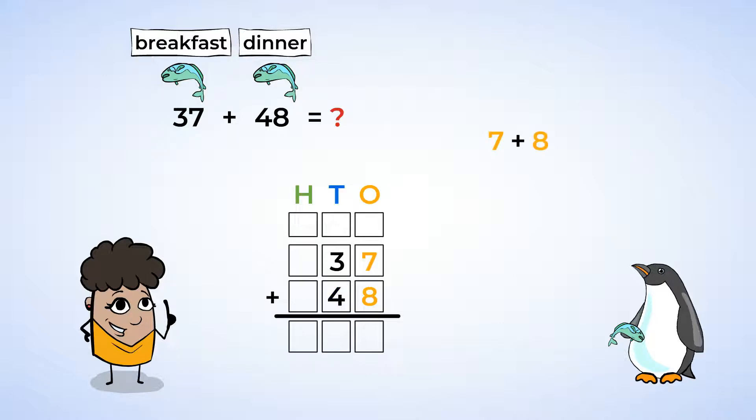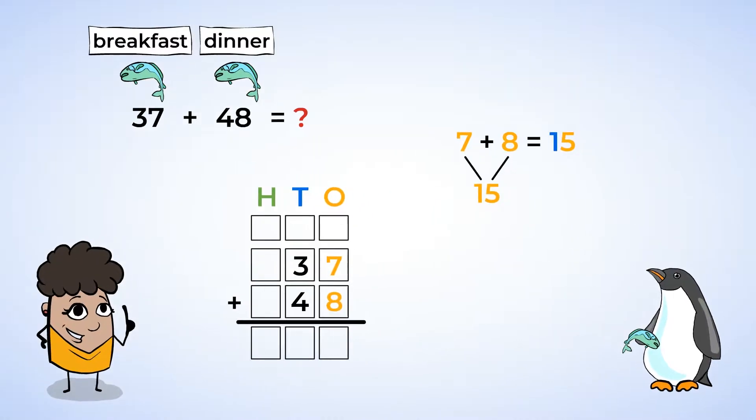We always start with the ones place, so we need to add 7 and 8 first. 7 plus 8 is 15, which has 1 tens and 5 ones. This number is too big for just the ones place. We will need to regroup, just like before.